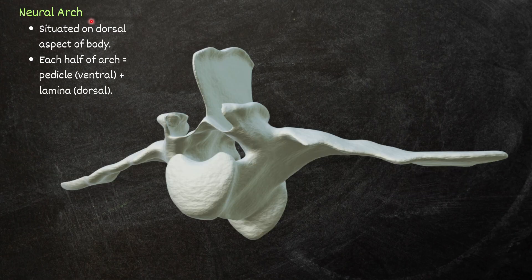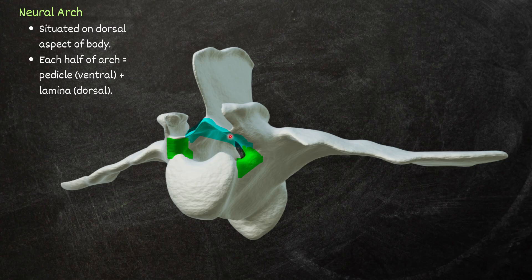Next, the neural arch is present on the dorsal aspect of the body. One half of the neural arch consists of a pedicel and the other component is the lamina. The laminae of both sides join together and form the roof of the neural canal.